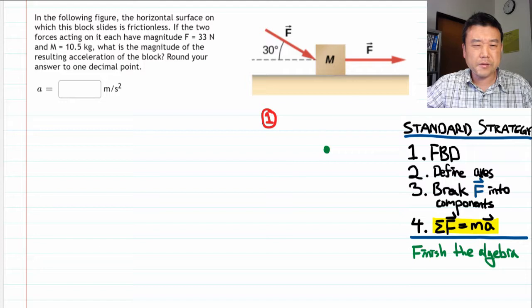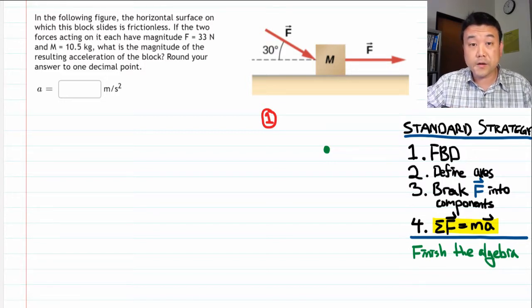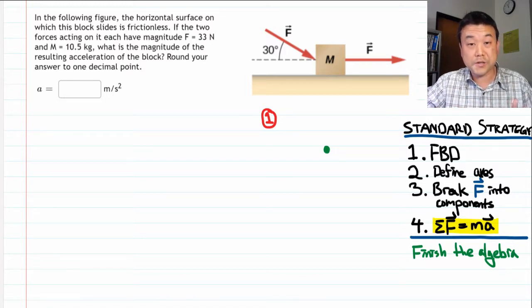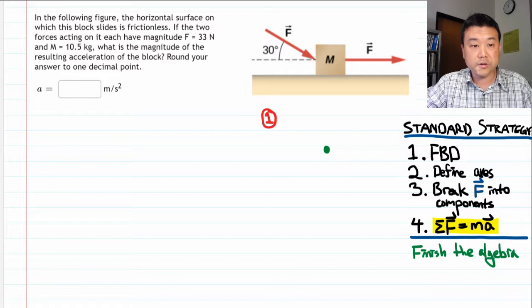If we identify the wrong force somehow, or if we forget to identify a force, then the rest of our steps will be wrong. So even though it looks like just drawing a picture, it is the most important step in the standard strategy.